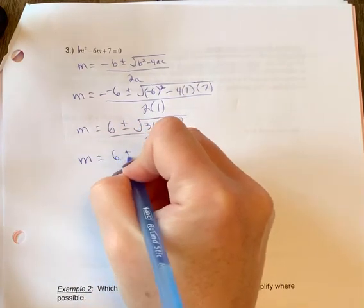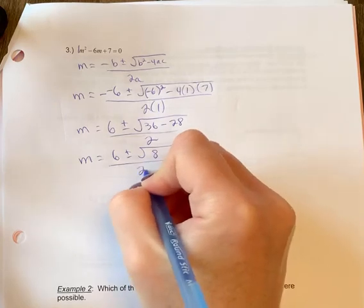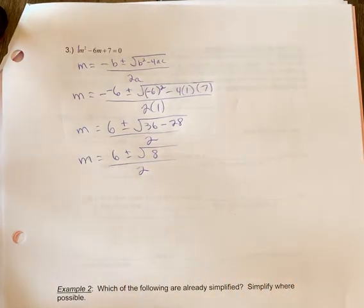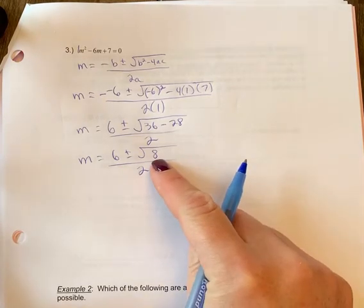And we'll simplify further, 36 minus 28, so we're going to have 8 over 2. So hopefully you got that far, and now you might need some help with simplifying. So to simplify this one, we need to simplify the radical first. So the square root of 8...